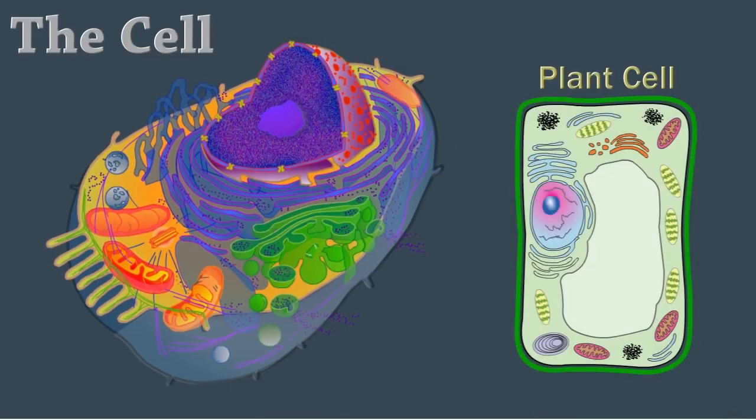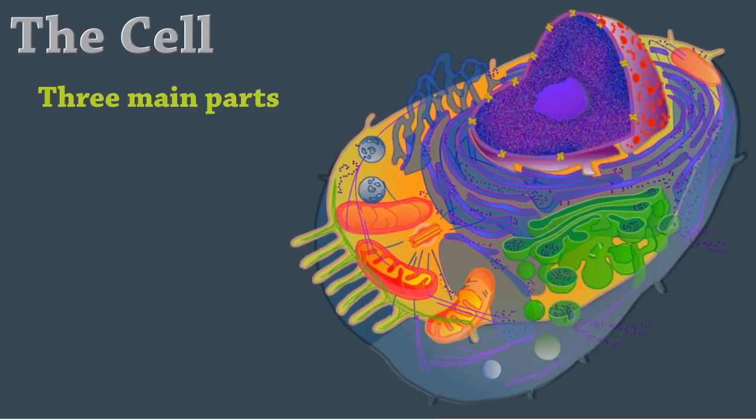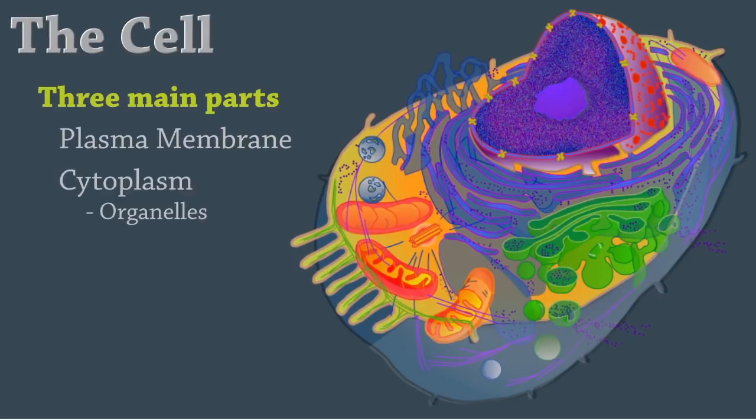Unlike plant cells, animal cells lack a cell wall, so they come in a variety of shapes and sizes. All animal cells have three main parts: the plasma or cell membrane, the cytoplasm which contains the organelles, and the nucleus.